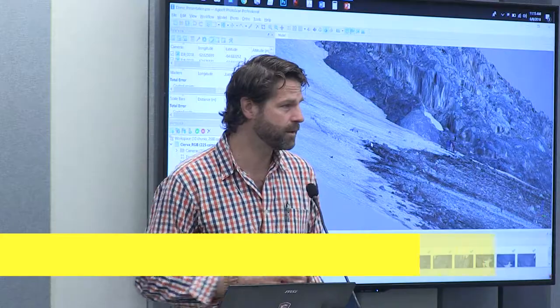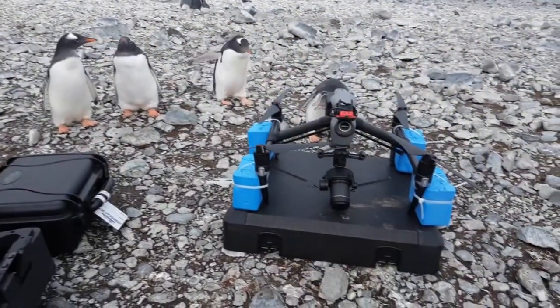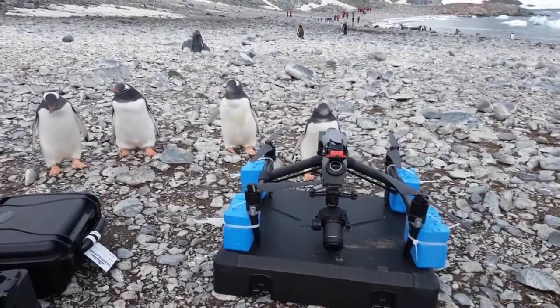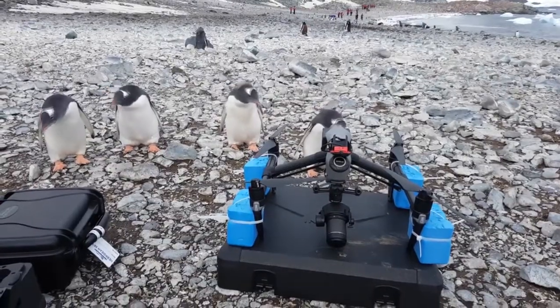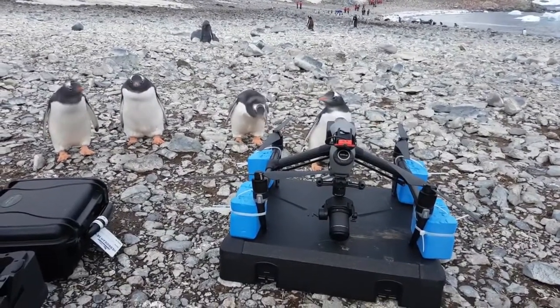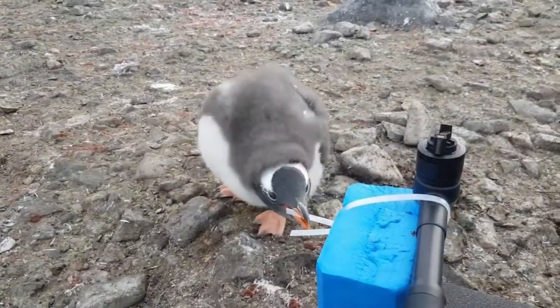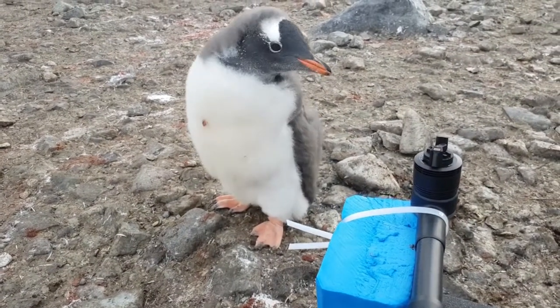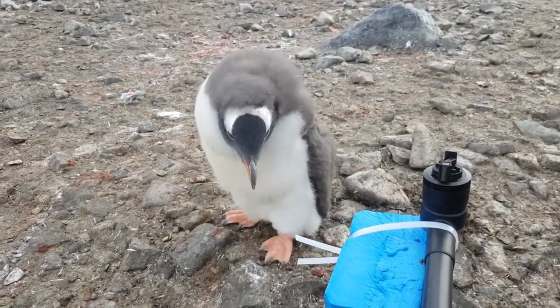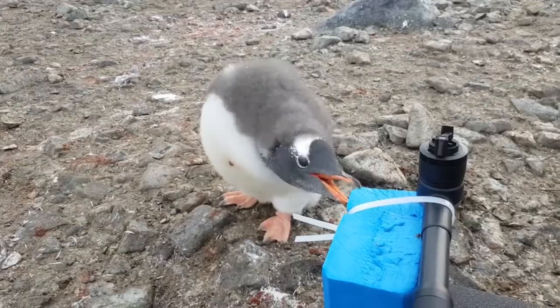Welcome to Antarctica. This is a 3D model created by combining a series of overlapping two-dimensional images captured by a drone. You mosaic them together and the software does this magical thing called structure from motion, where it correlates overlapping pixels and extracts three-dimensional information from that.